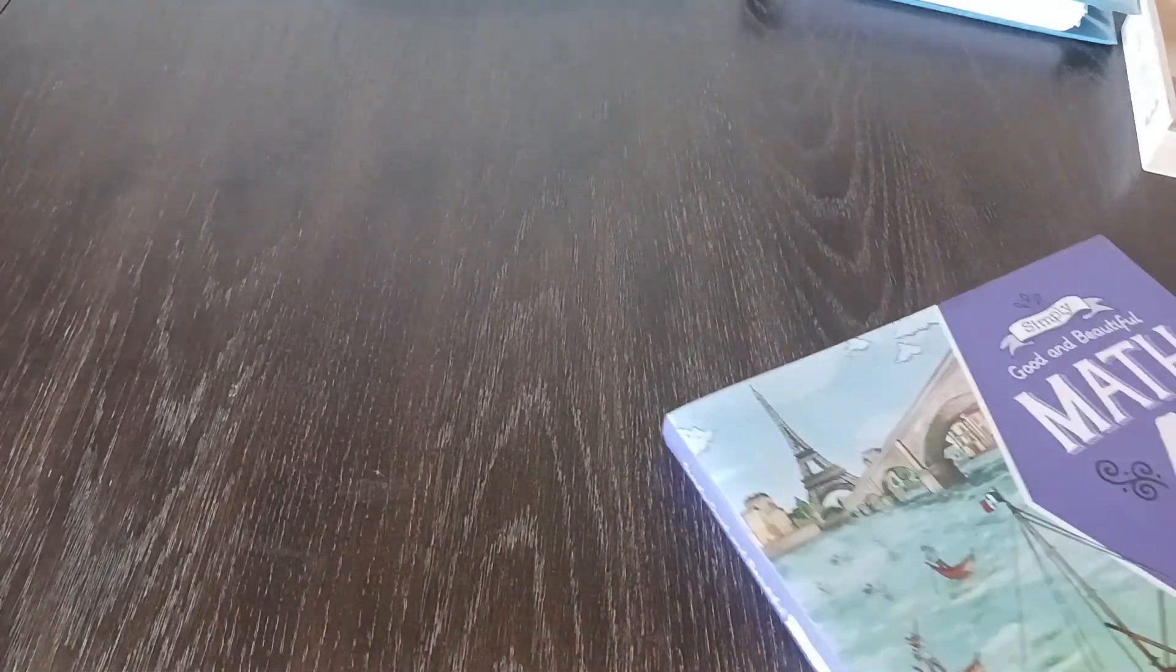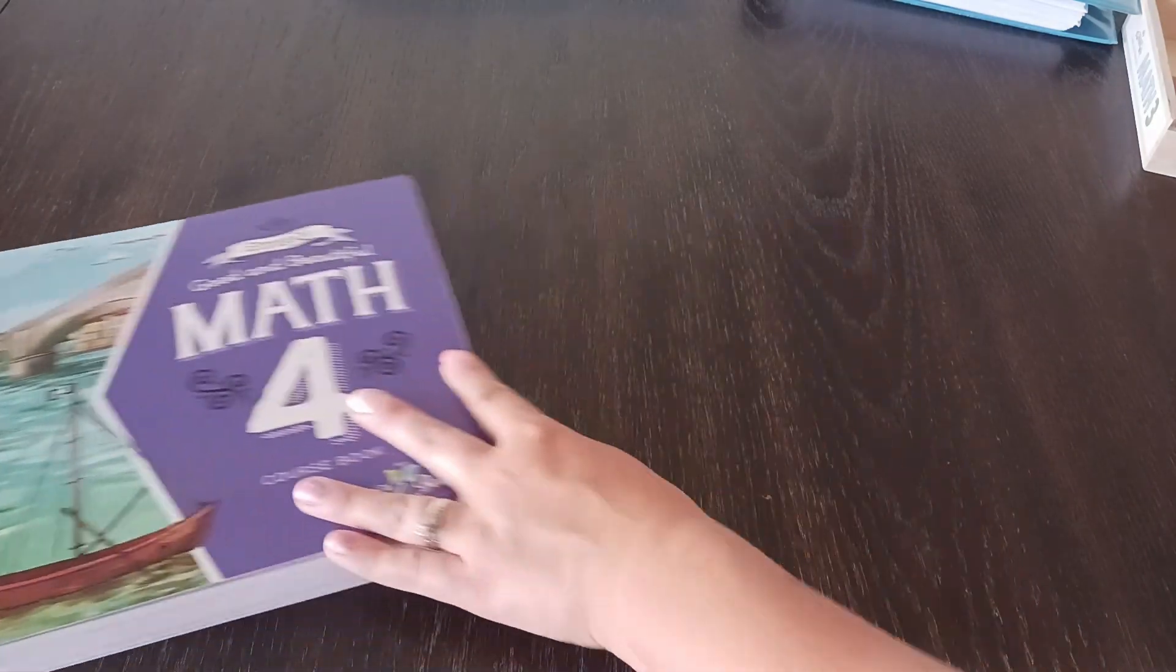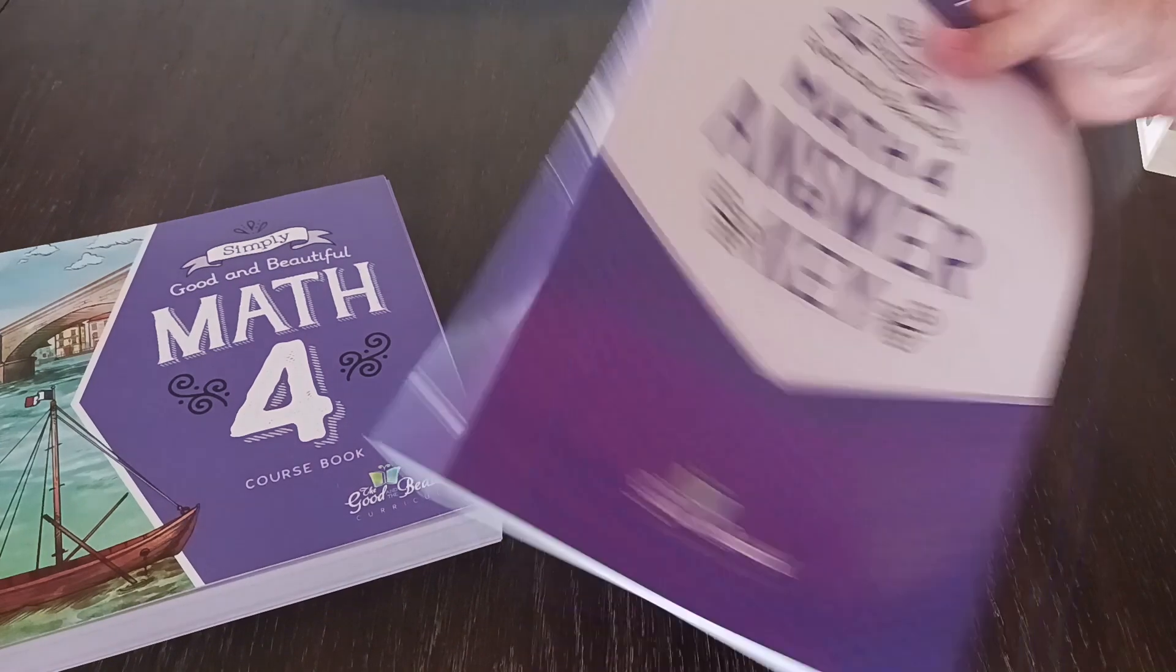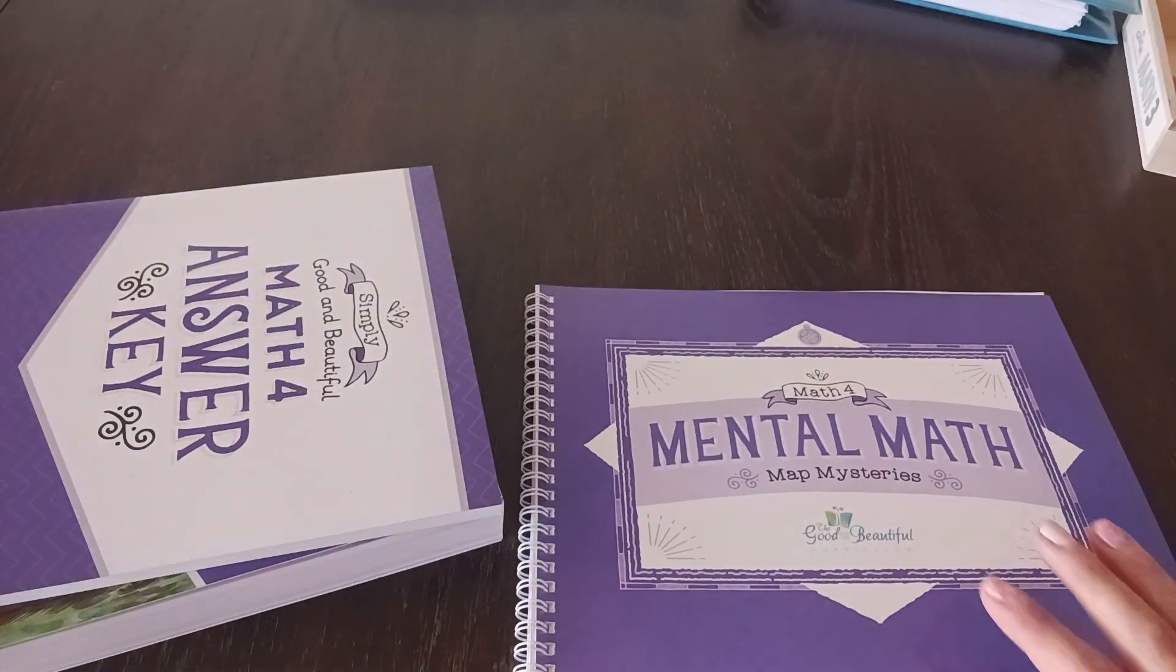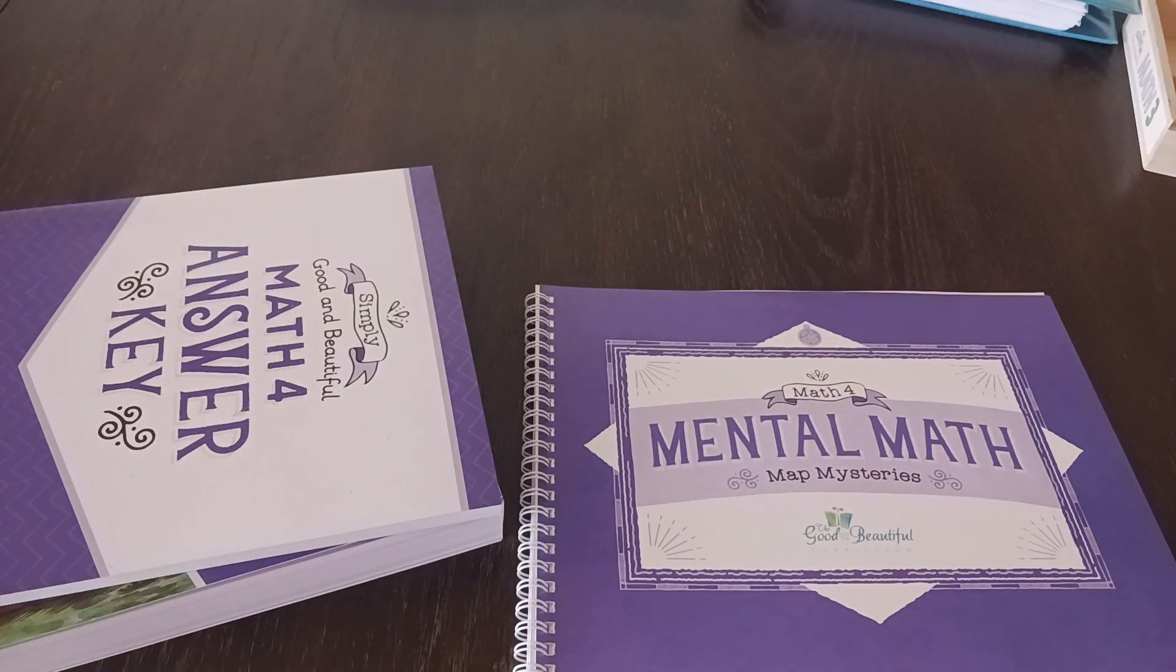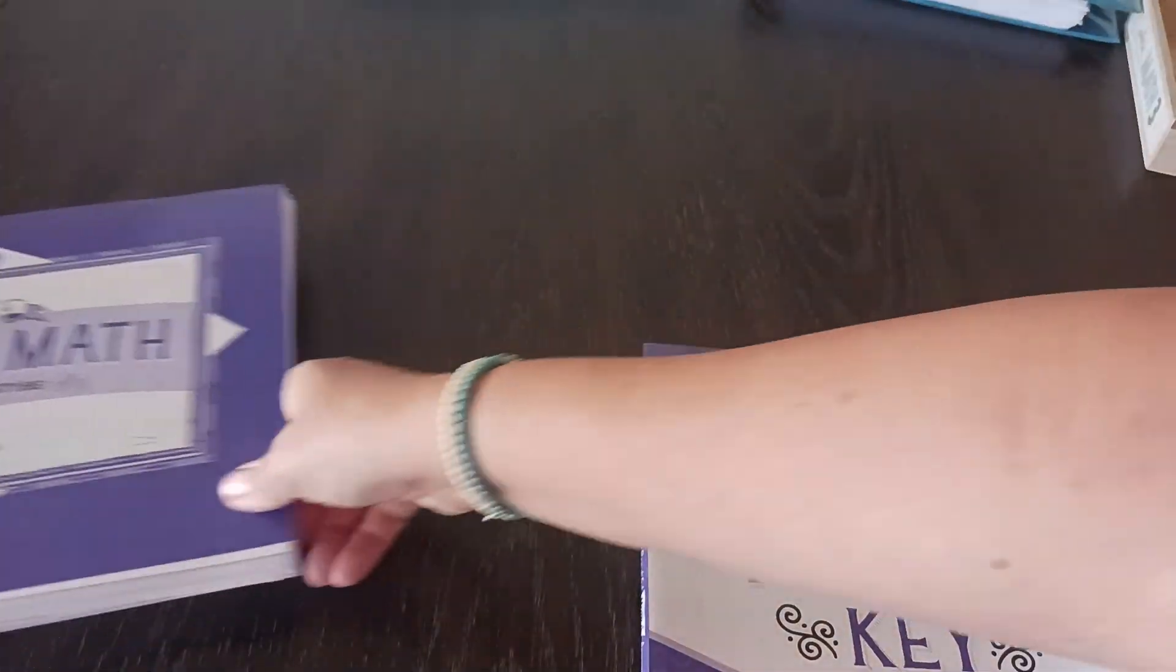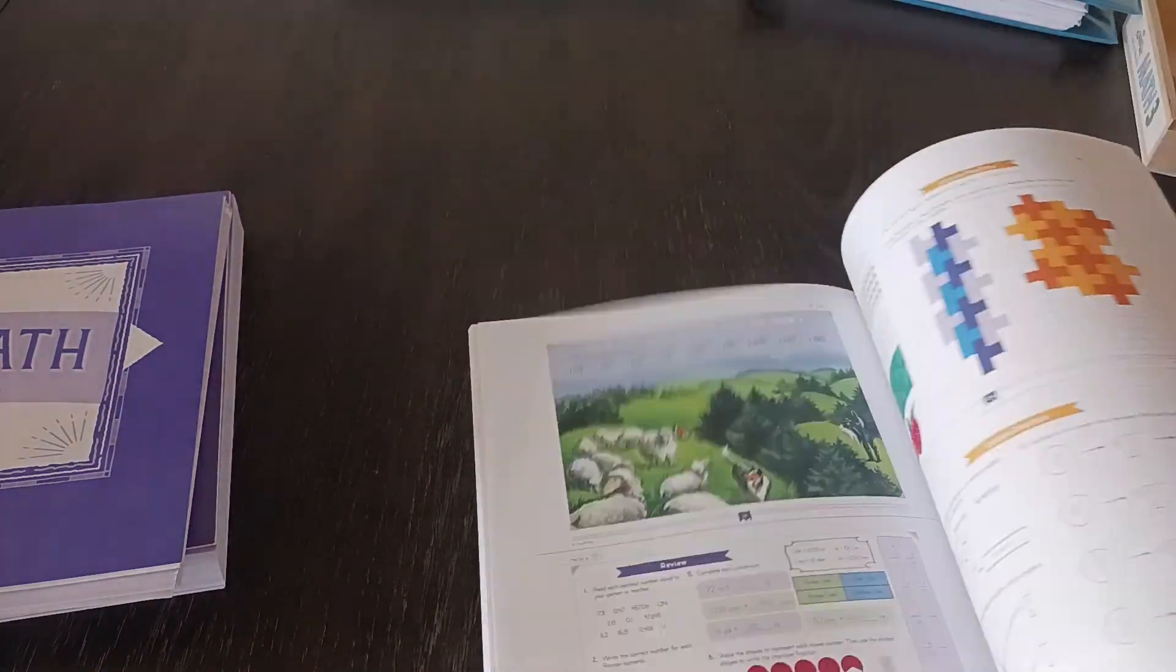Let's move on to math four. So the course book, the teacher answer key, and you're going to have this mental math. So math four does not come with a manipulatives box. So this is just going to be, we'll flip through it just so you can see. It's the same thing I have for grade three. It's just giving you all the answers.